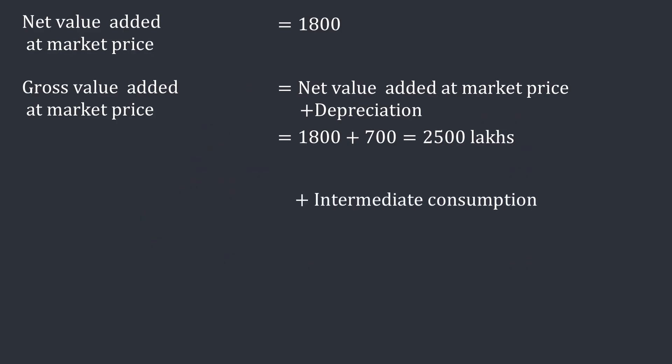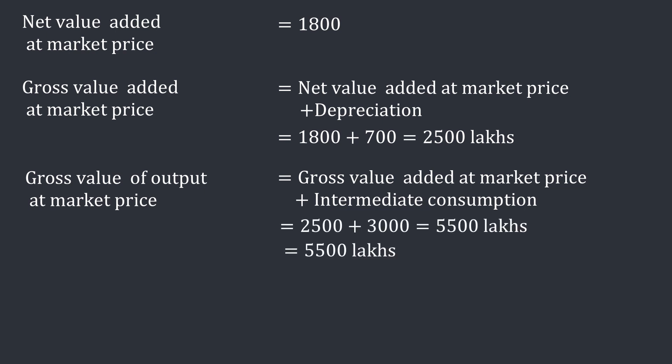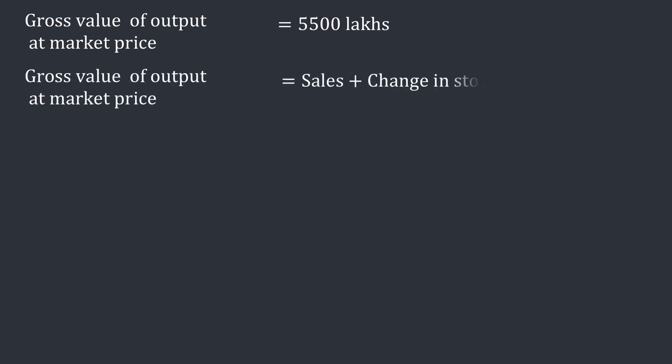We add intermediate consumption to gross value added at market price to get gross value of output at market price: 2500 plus 3000 equals 5500 lakhs. Gross value of output at market price equals sales plus change in stock.